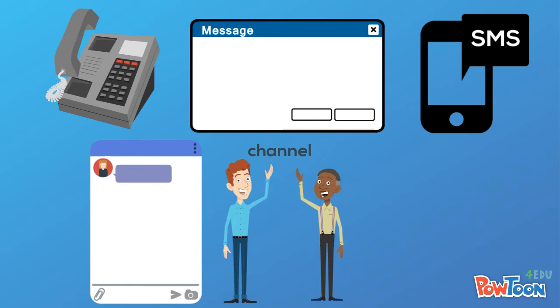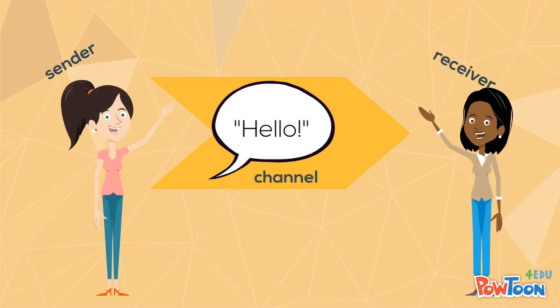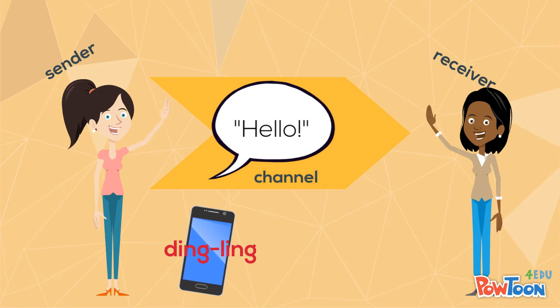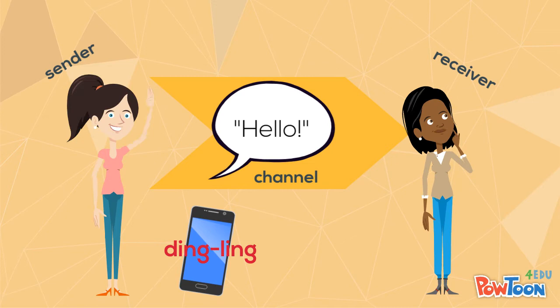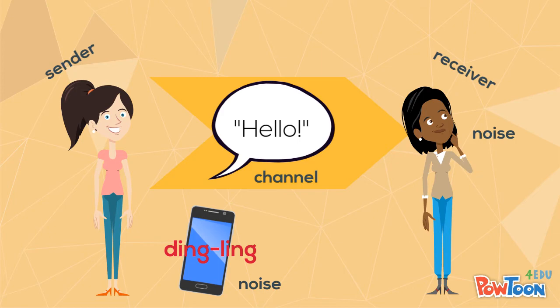A channel could be by phone, email, text, IM, face-to-face, and many others. While this is happening, a cell phone might be ringing, or one of the communicators is thinking about something else. This is referred to as noise. Noise is anything that interferes with the sending of a message.